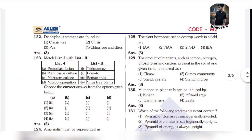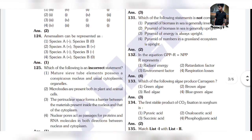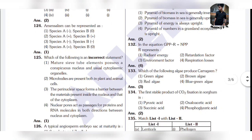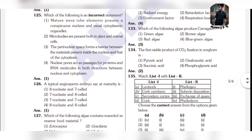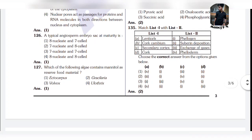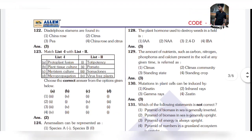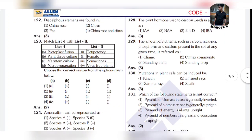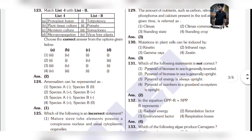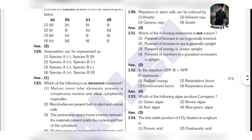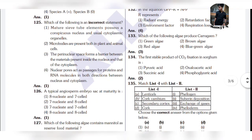122 is 3, 123 is 3, 124 is 2, 125 is 1, 126 is 1, 127 is 1, 128 is 1, 129 is 3, 130 is 3, 131 is 3, 132 is 2, 133 is 4.